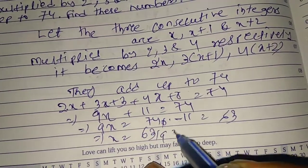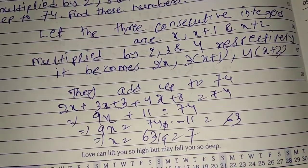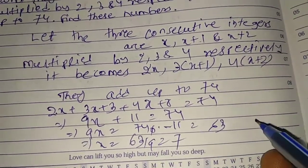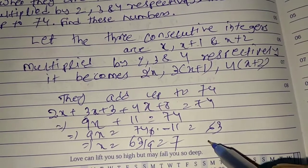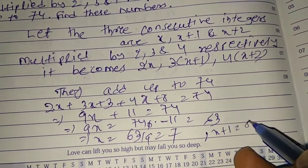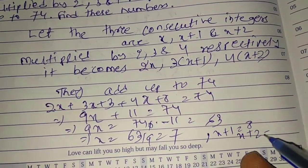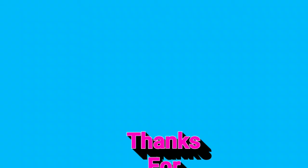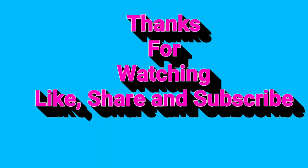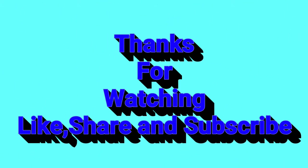X equal to 63 by 9, that is 7. And the other two numbers are X plus 1, that is 8, and X plus 2, that is 9. Thanks for watching, like and share and subscribe the channel. For new notifications, press the bell icon. Thank you.